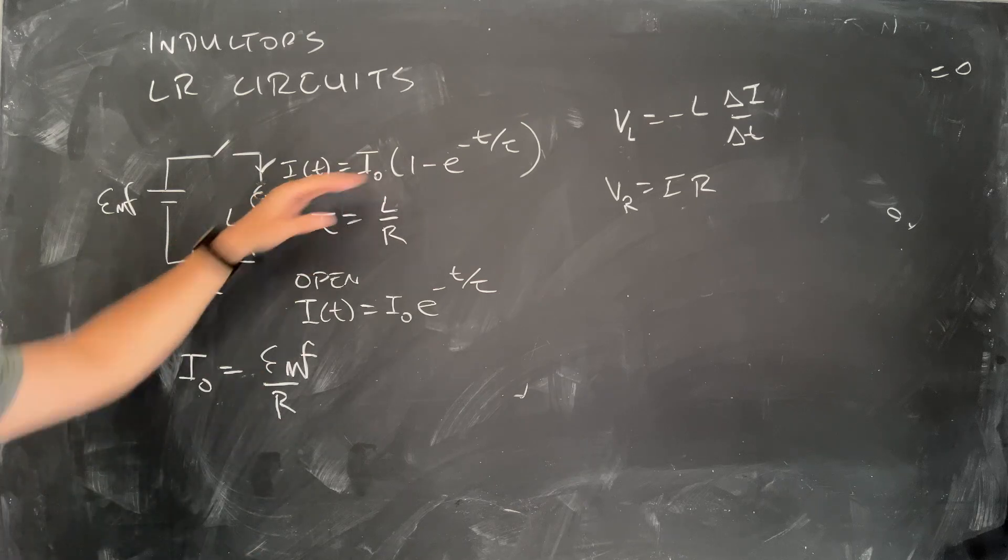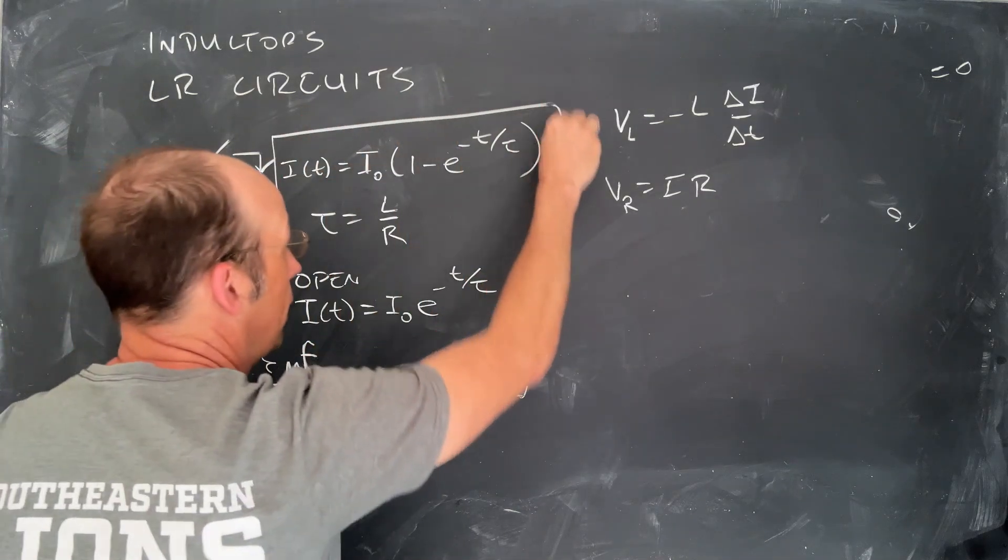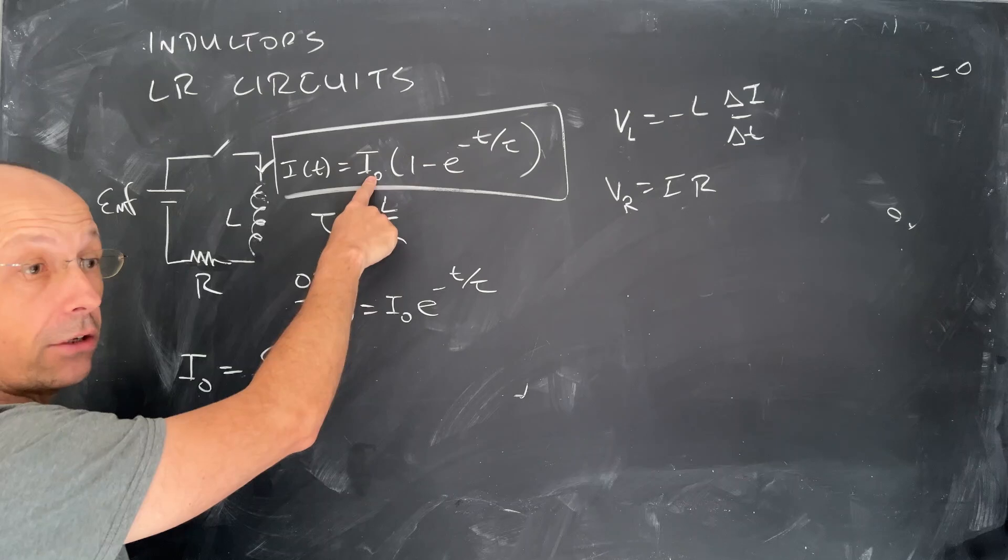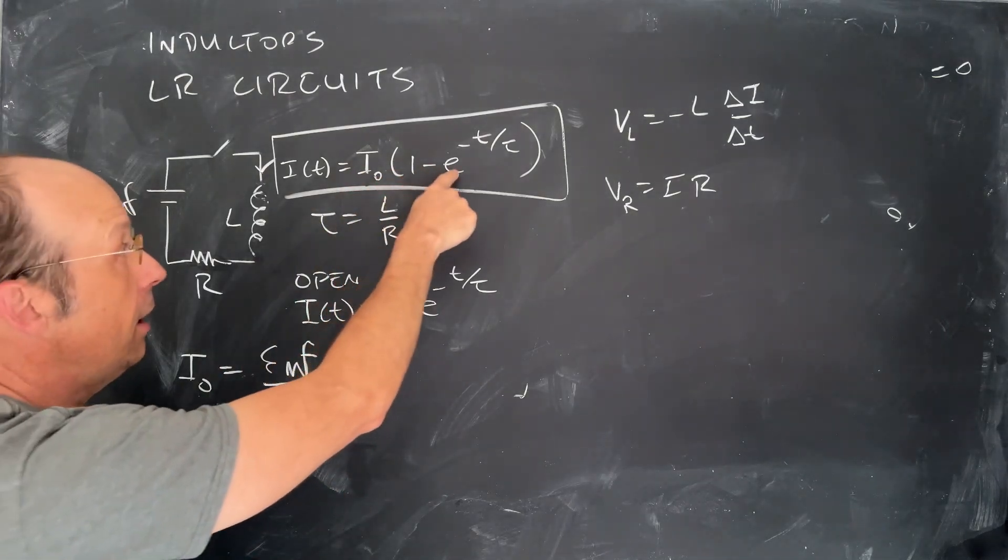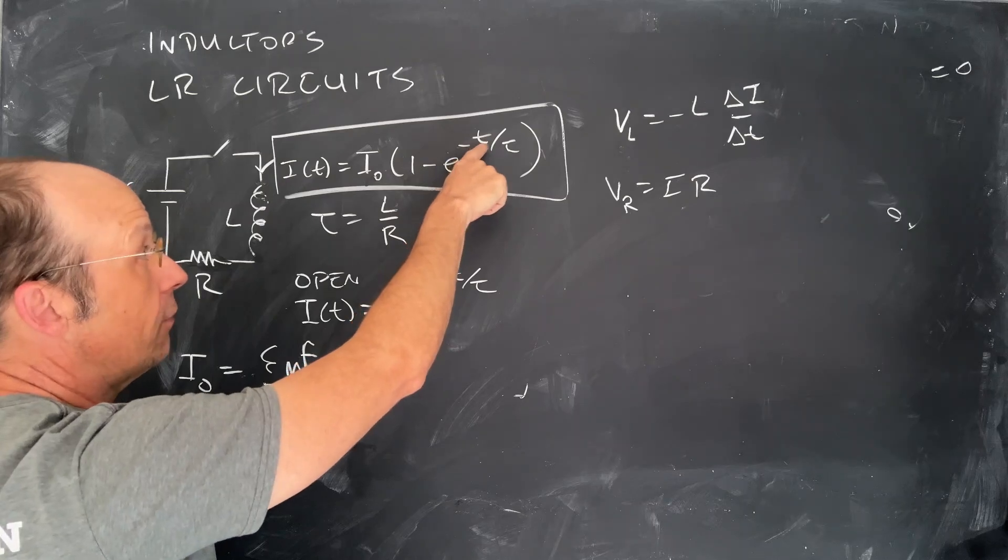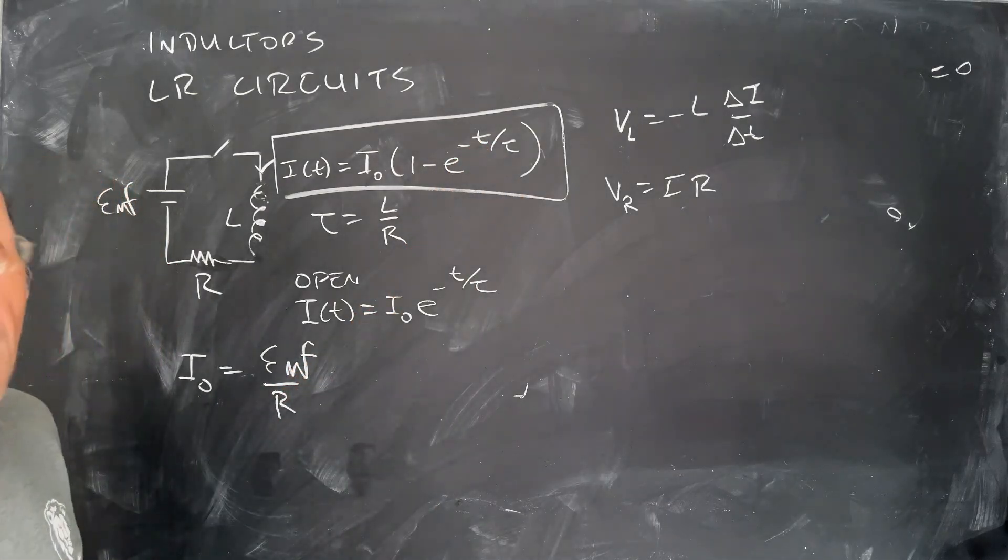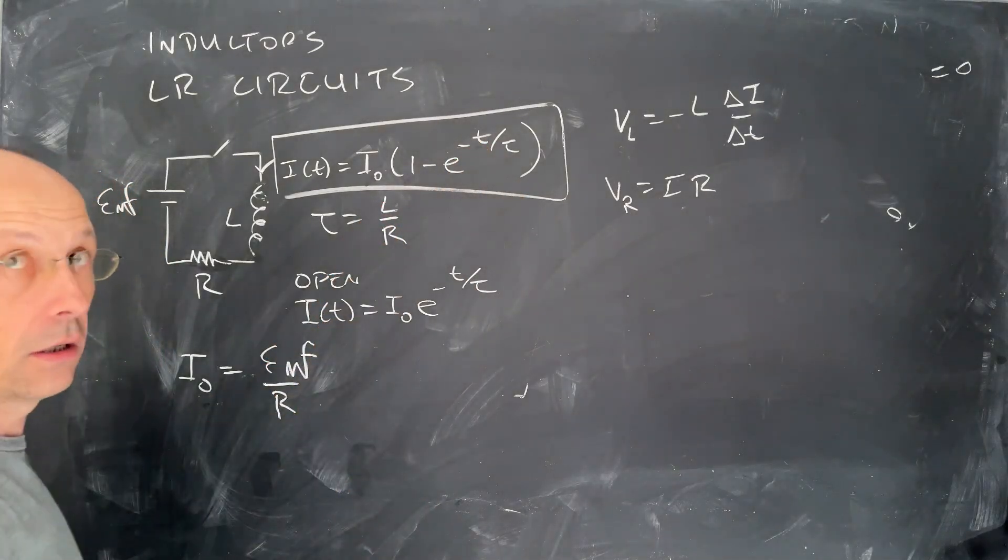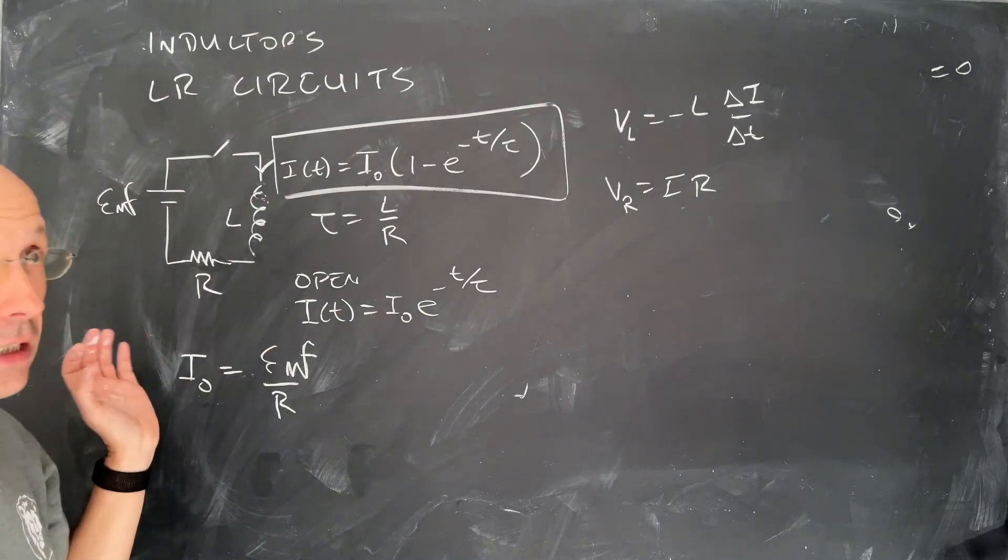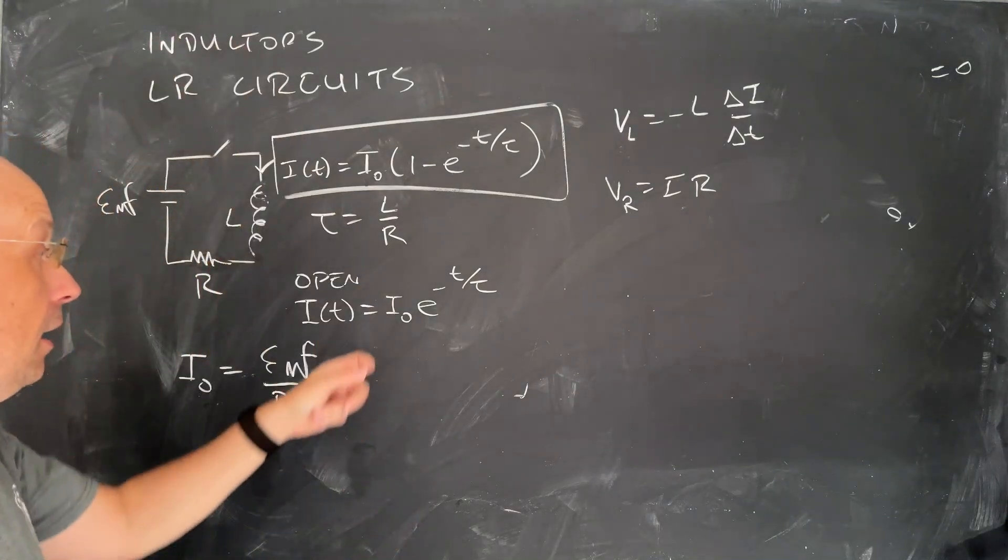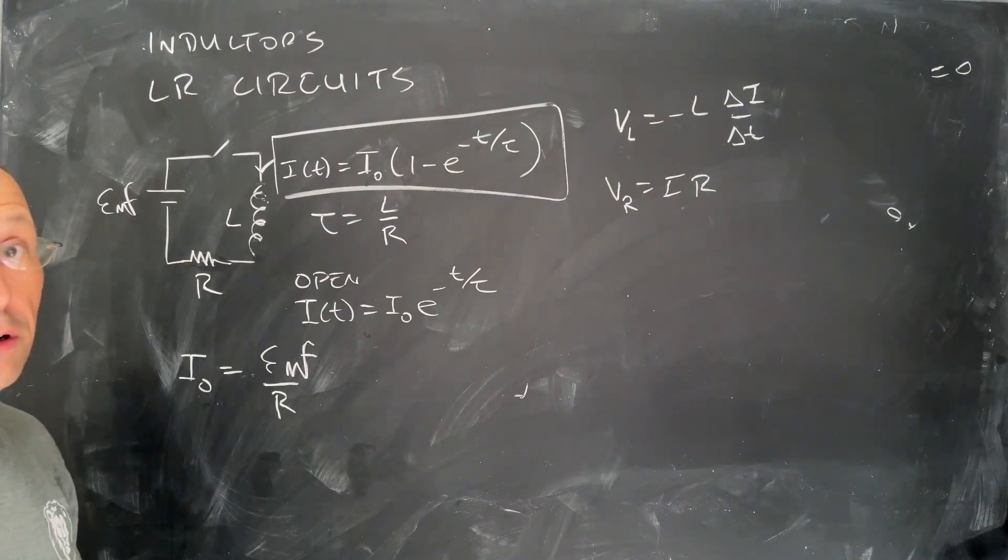So instead, we get this charging circuit, this charging current. So this is how we could describe the current as a function of time. That's I zero, that's the number one, this is exponential negative T over tau, where tau is the time constant L over R. And then when you open the circuit, the same thing happens. You can't change instantly, so it can't just turn off instantly. And we have this expression for the current as a function of time.